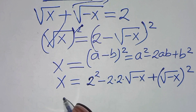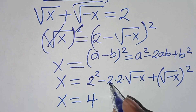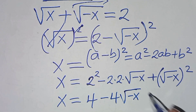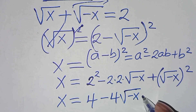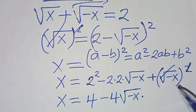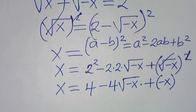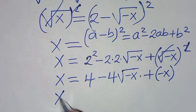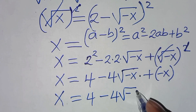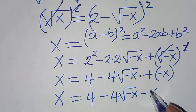So the next step: x equals 2 squared which is 4, then 2 times 2 is 4, so minus 4 times square root of minus x, then plus square root of minus x squared, which gives minus x. So we have x equals 4 minus 4 square root of minus x minus x.